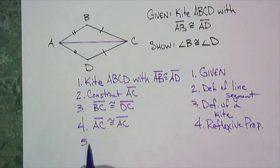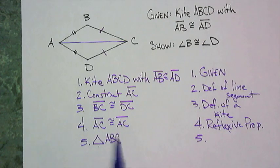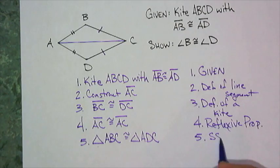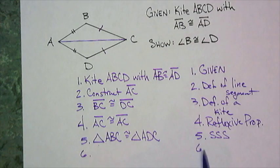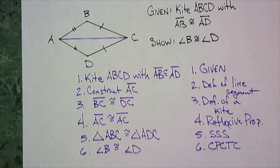Now, can I say that the two triangles are congruent? Certainly I can. Make sure that you name them correctly. Triangle ABC must be congruent to triangle ADC. And that is side, side, side. Next step, angle B of the top triangle must be congruent to angle D of the bottom triangle. And that is by corresponding parts of congruent triangles are congruent. We proved it.